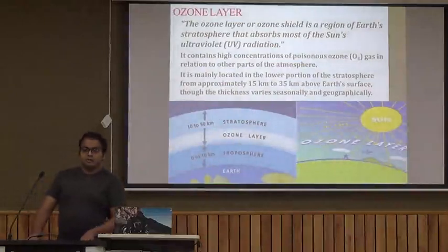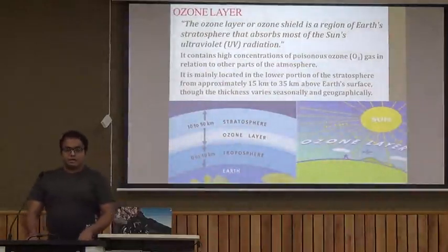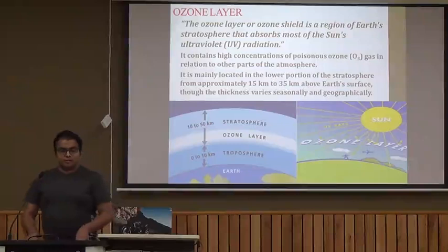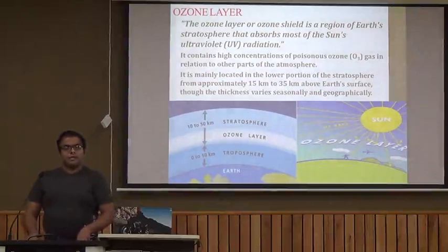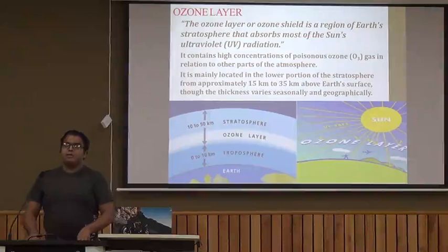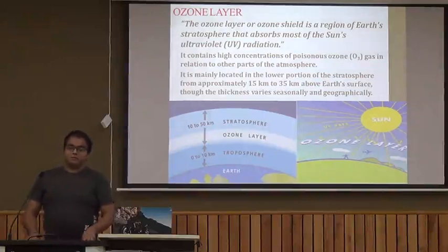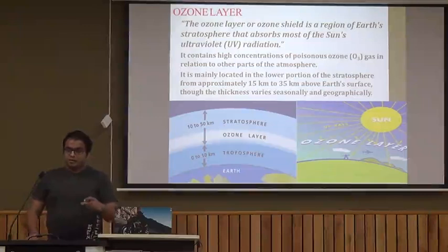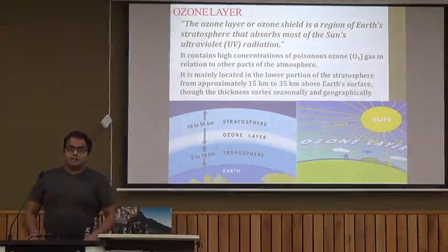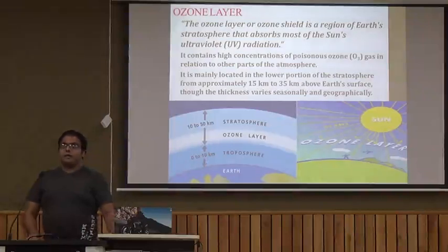The last topic is the ozone layer. The ozone layer is the region of Earth's stratosphere that absorbs most of the sun's ultraviolet radiation. It contains ozone gas in a very high percentage and is located between 15 km to 35 km above Earth's surface. Because of the ozone layer, ultraviolet rays are not allowed to reach the surface of Earth, and as a result we are all protected from them.